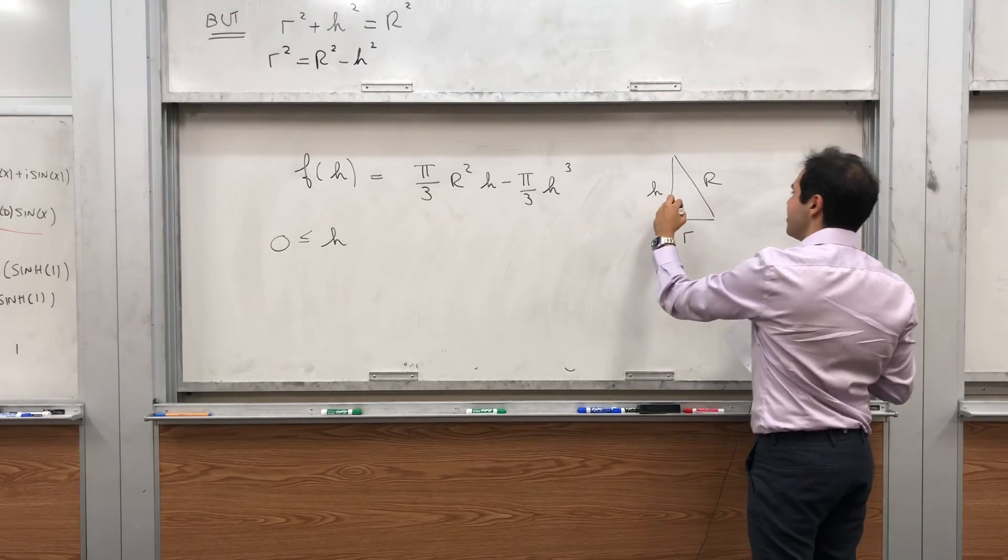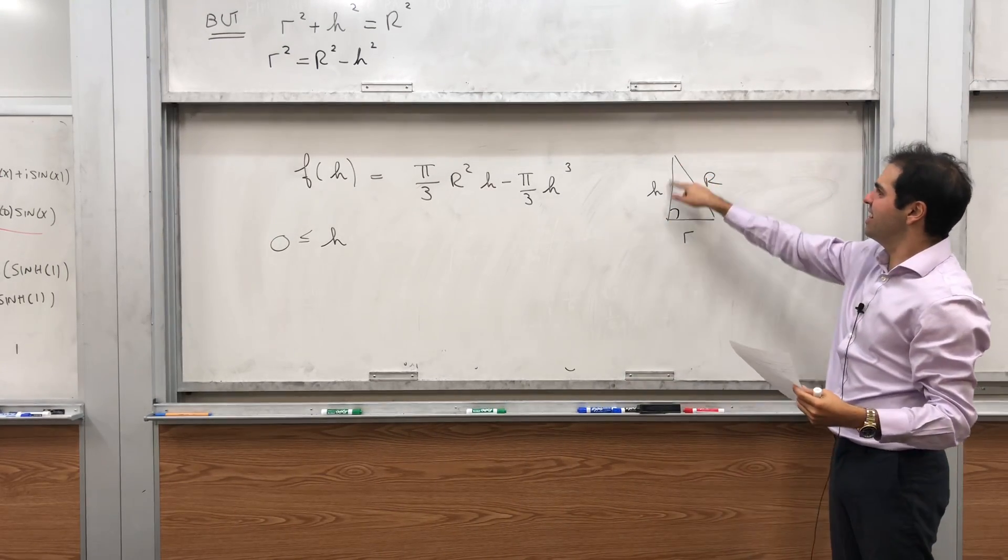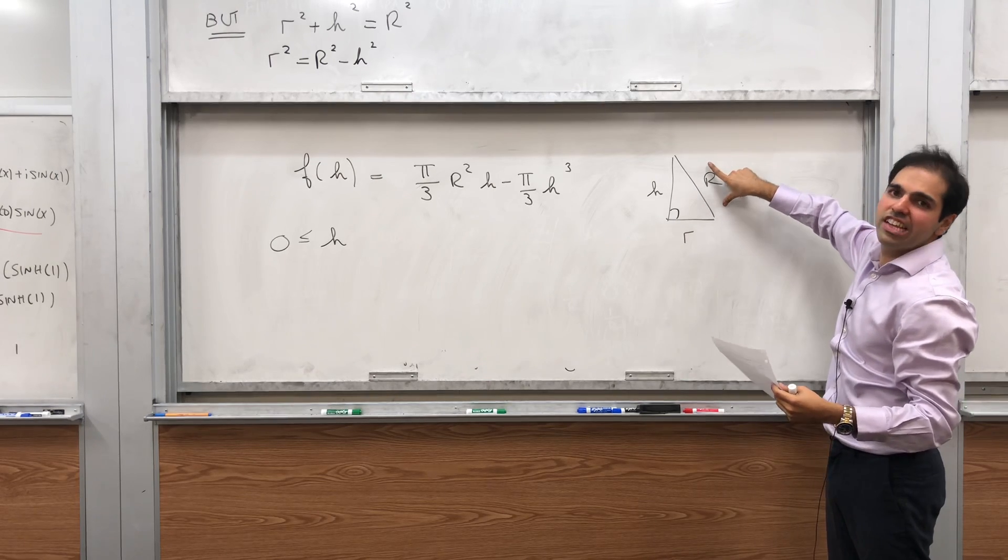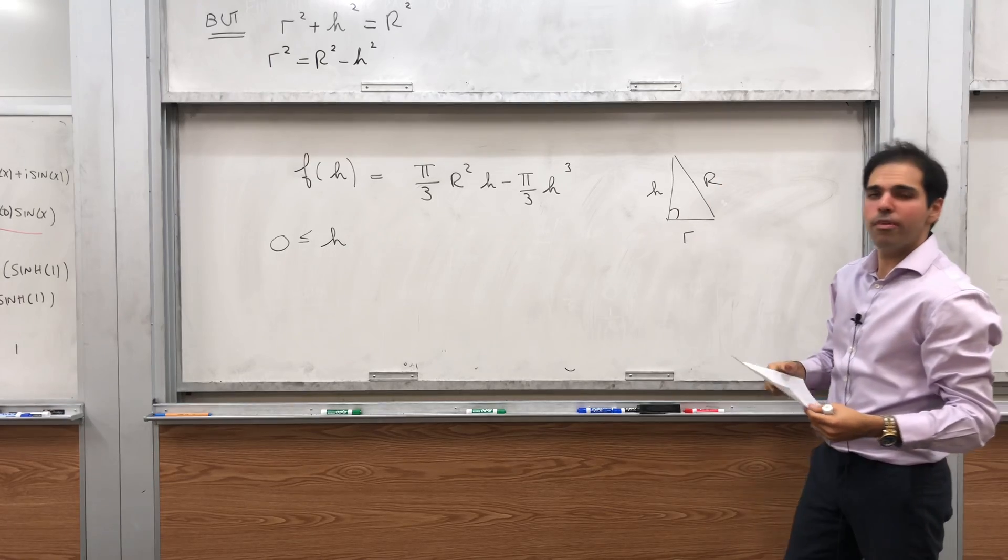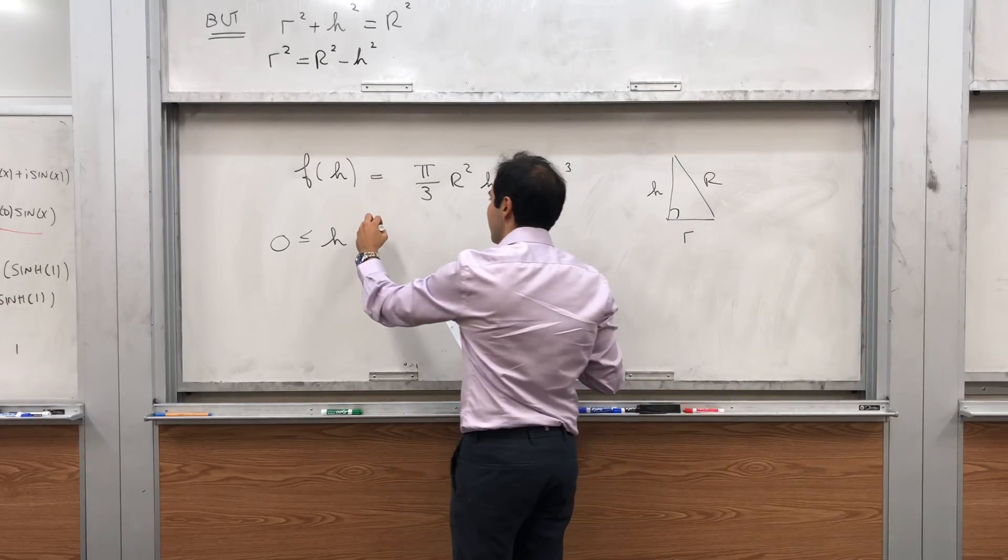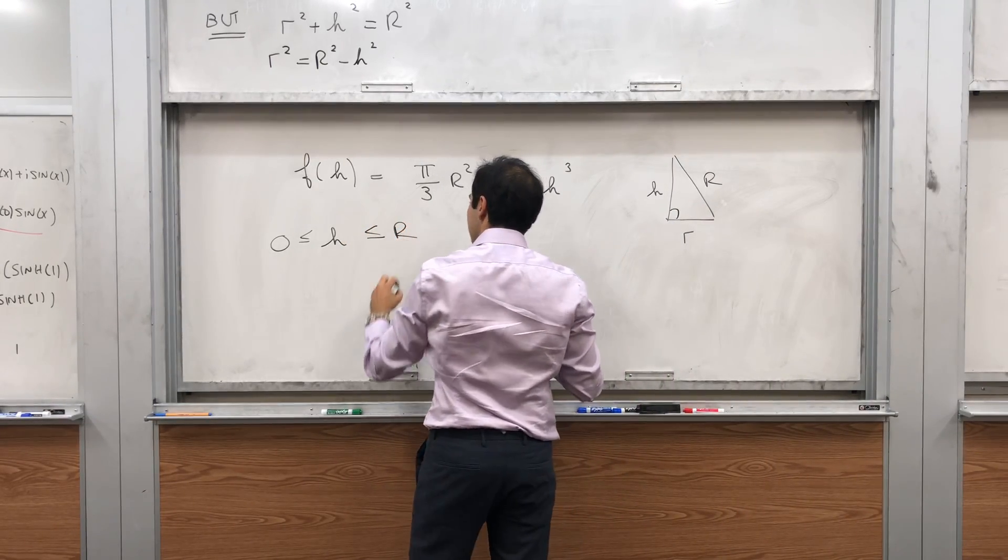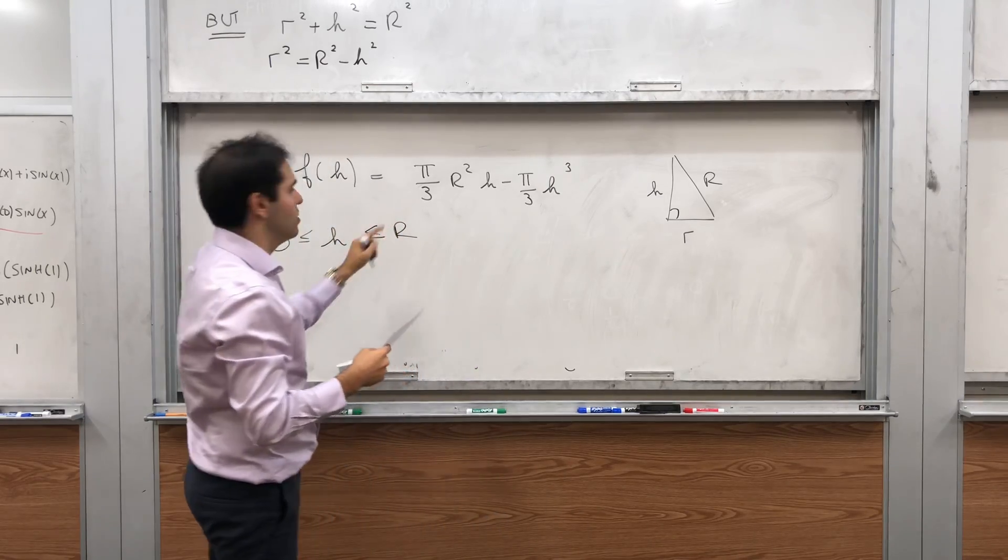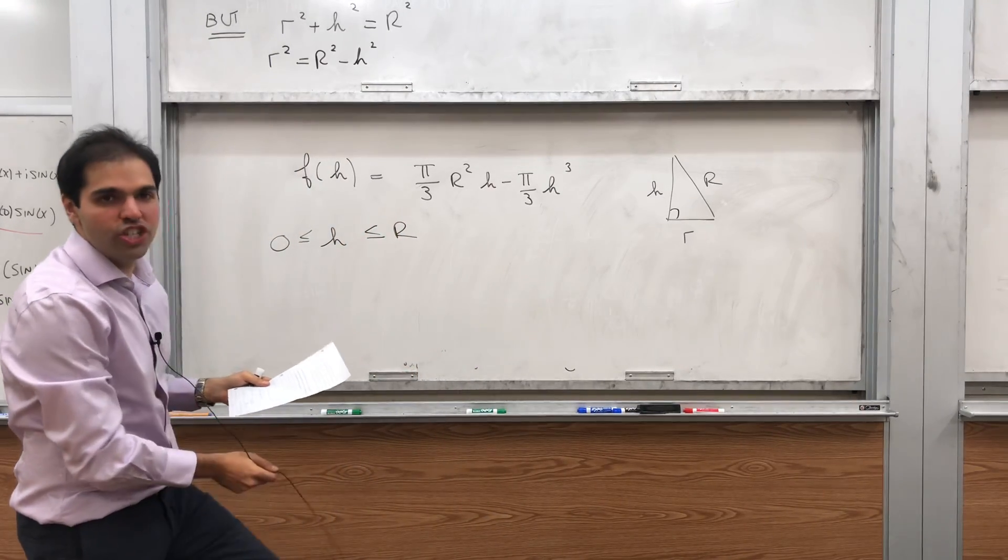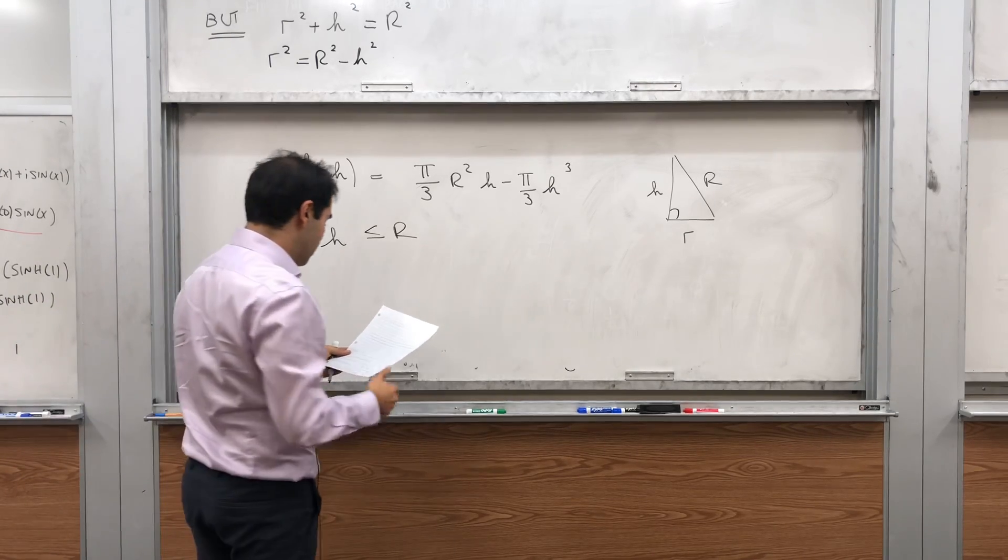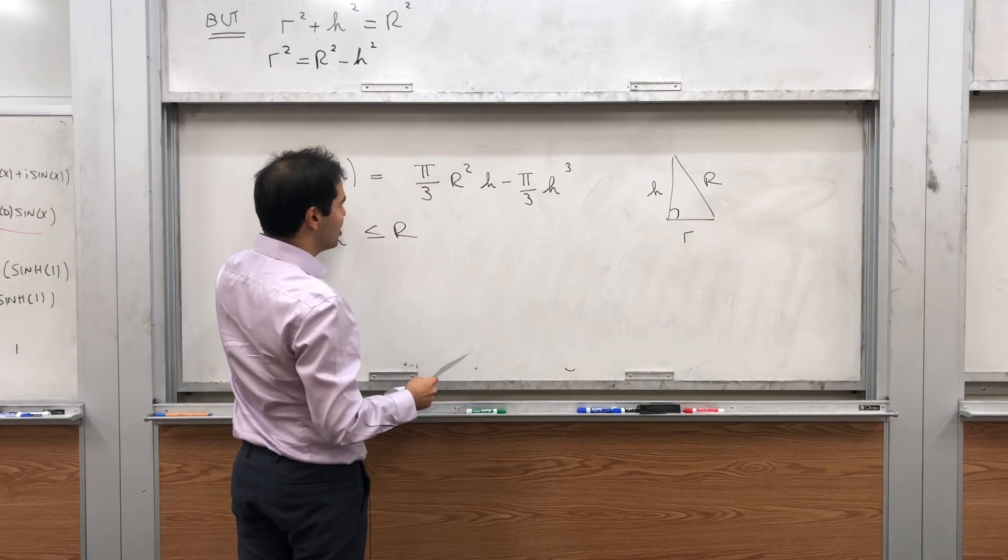And moreover, look, this is a triangle. This leg can never be bigger than the hypotenuse. So if h is bigger than capital R, we have a problem because then it wouldn't be that right triangle anymore. So in particular, h is between 0 and R. And we'll need that to check maximum min. Okay, so we have our function.